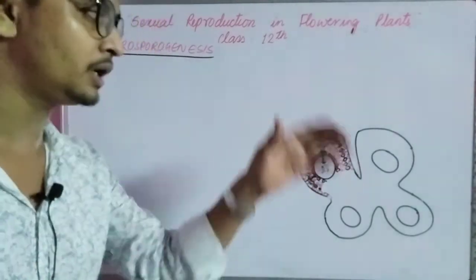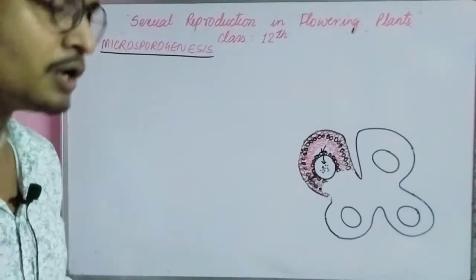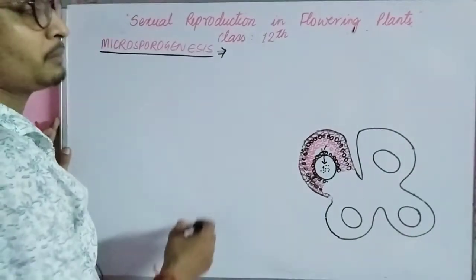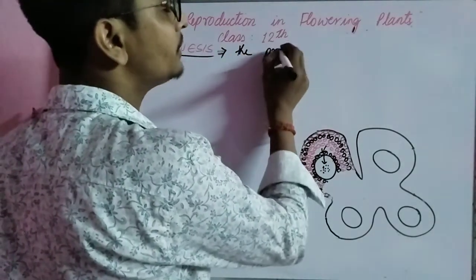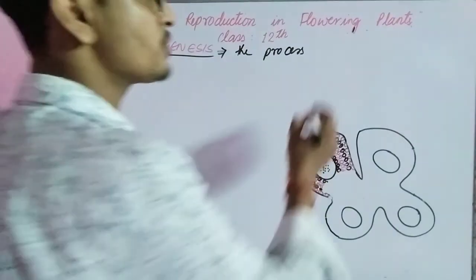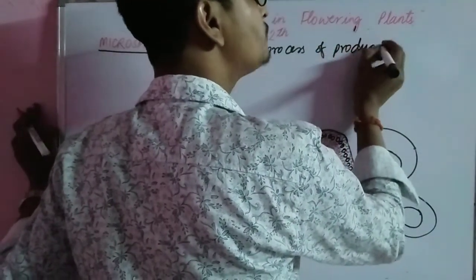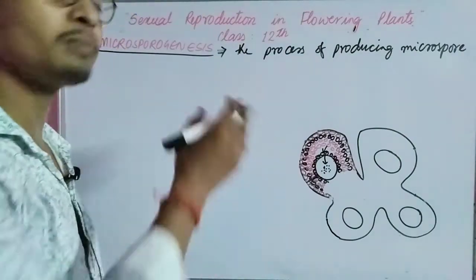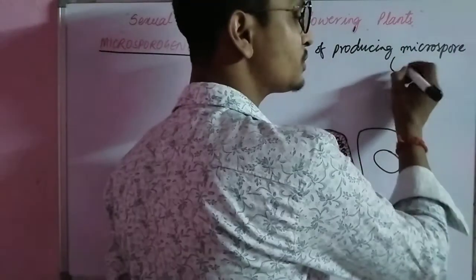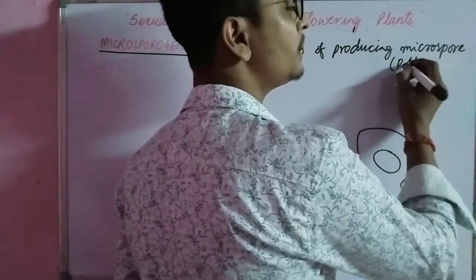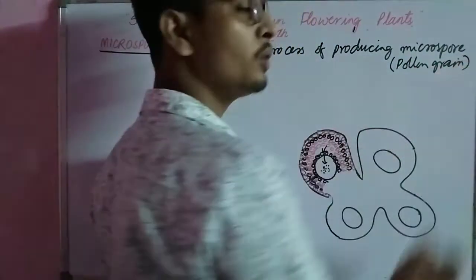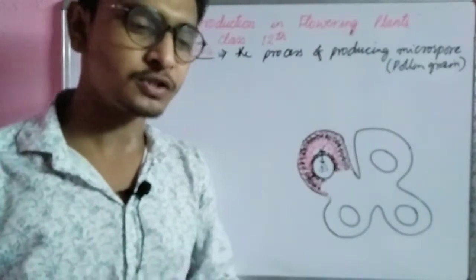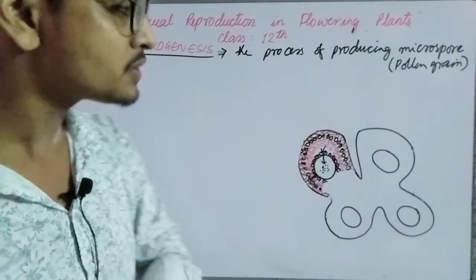Microsporogenesis — what is it? It is the process of producing microspores. It is known as microsporogenesis. And what is a microspore? The microspore is the pollen grain. So the process of producing pollen grains is known as microsporogenesis.